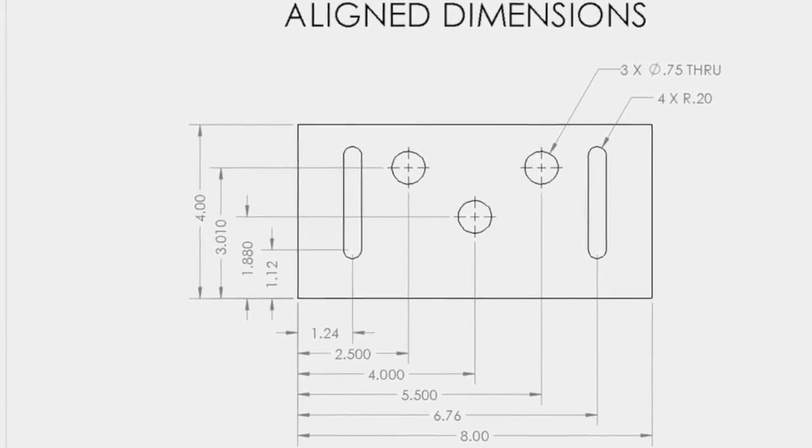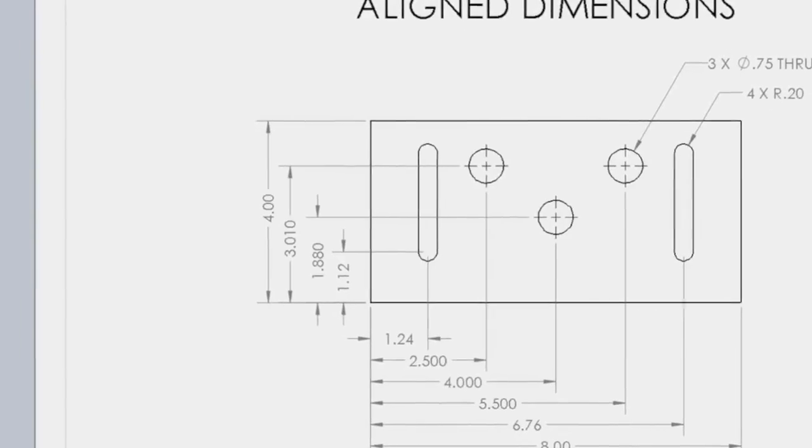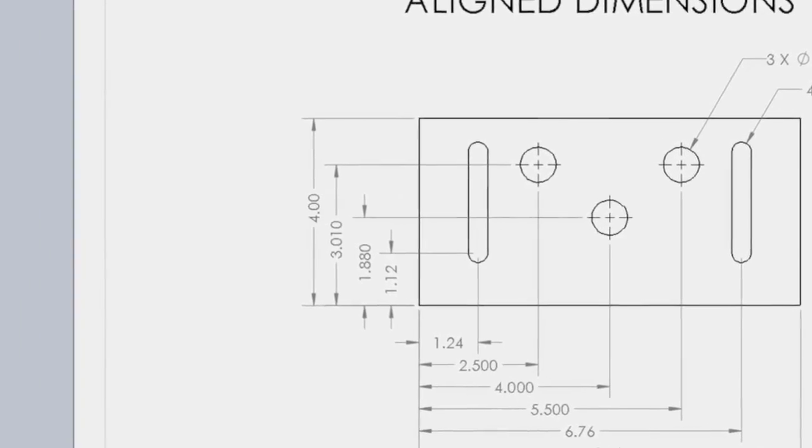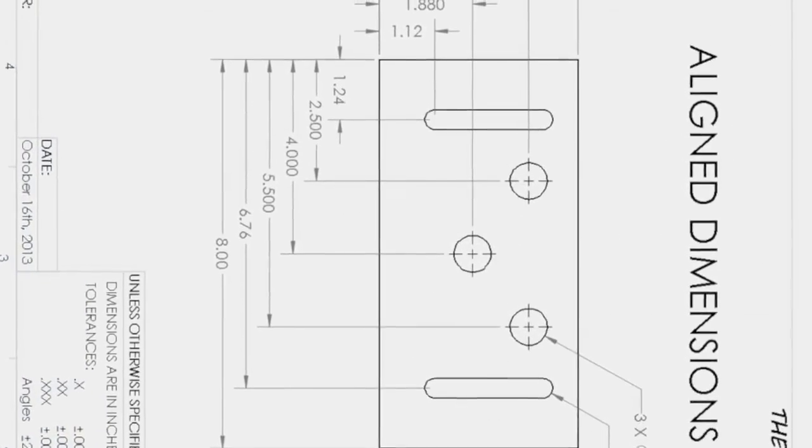Vertical dimensions are placed from the bottom of the part to the top of the part, and are read with the right side of the page facing the reader.